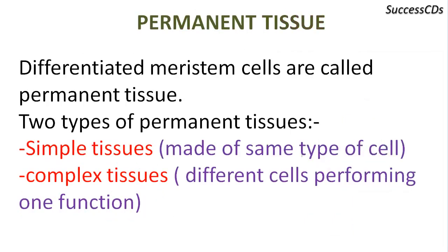Permanent tissues are basically differentiated meristem cells which have changed their shape and size to get specialized and perform different functions inside the plant body. It is of two types: simple tissues, which are made of the same type of cell, and complex tissues, which are formed of different cells performing one function.